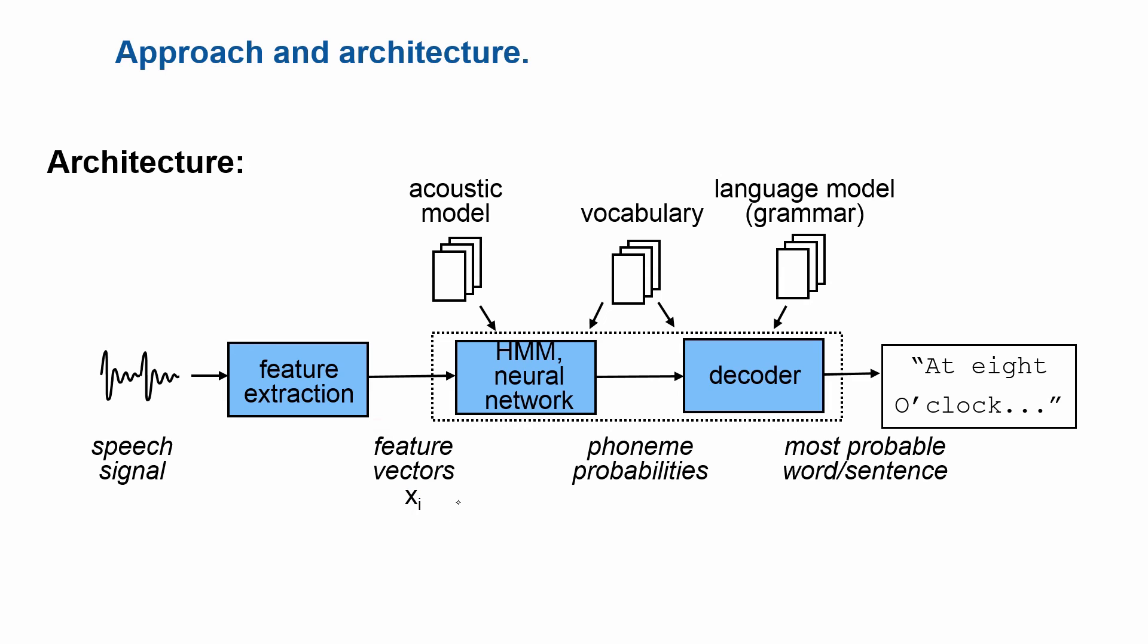Now for each of the feature vectors, the first classification block calculates the probabilities that these features correspond to individual sound classes or phonemes. The approach which is taken here is either a hidden Markov model, HMM, or a neural network. We will explain both approaches in a minute. And the information which is used for this purpose is an acoustic model characterizing how a typical feature vector for a particular phoneme looks like. And then also the vocabulary which defines which set of phonemes is allowed in a certain language.